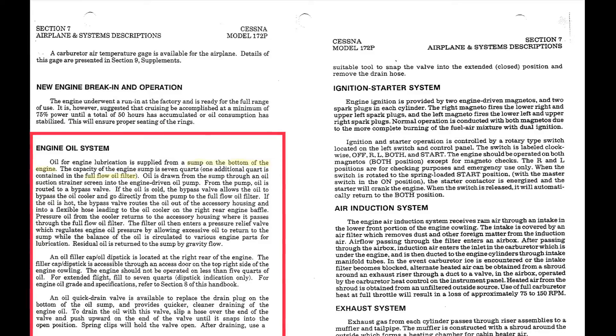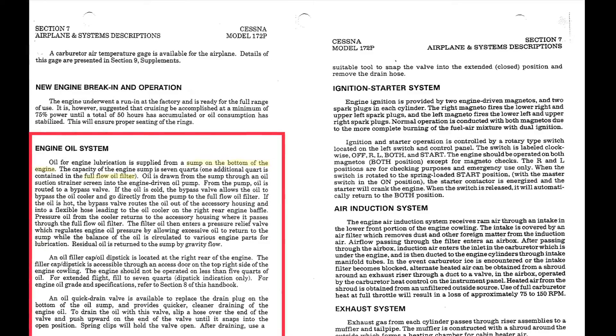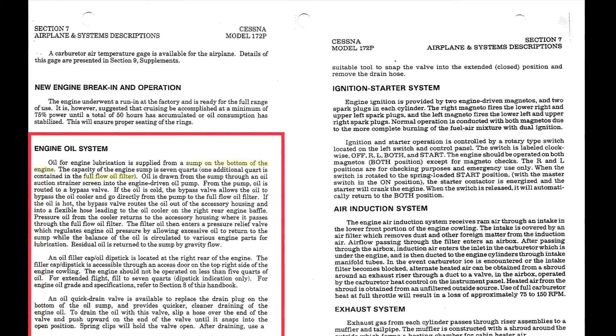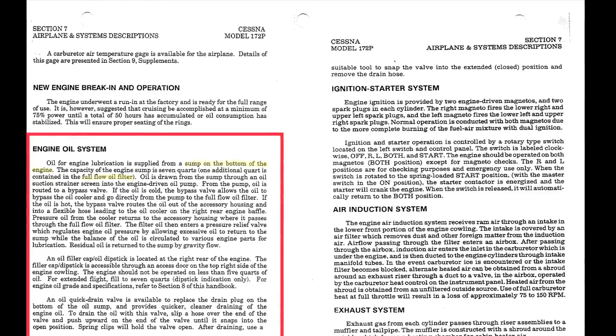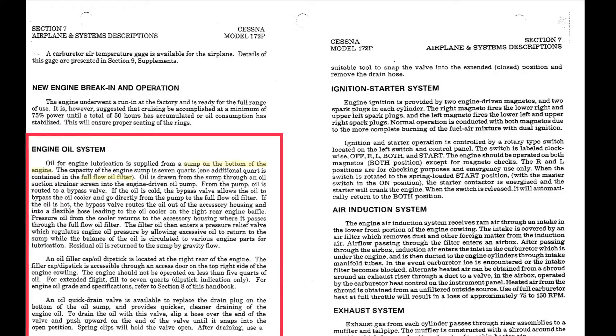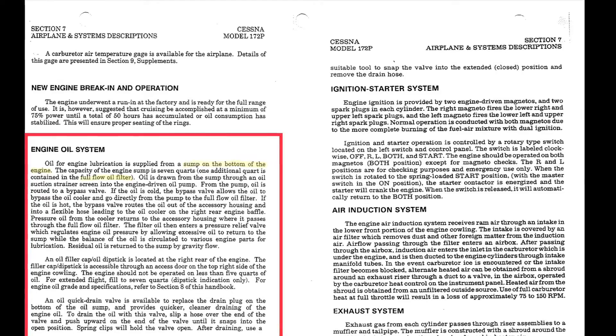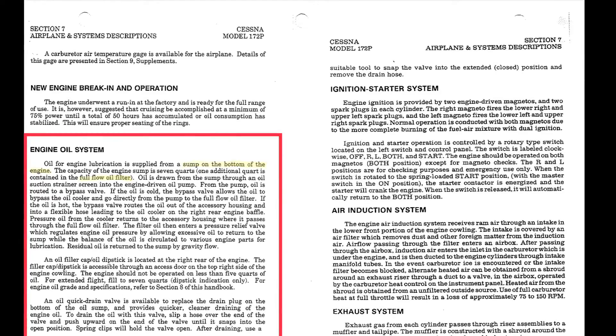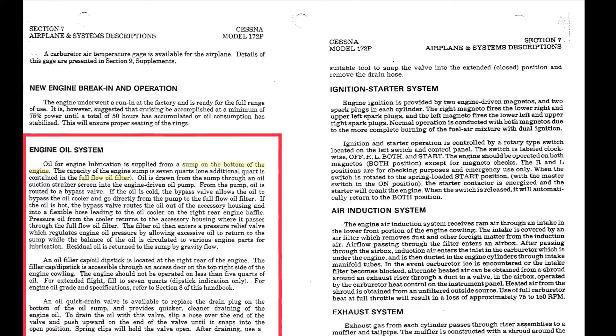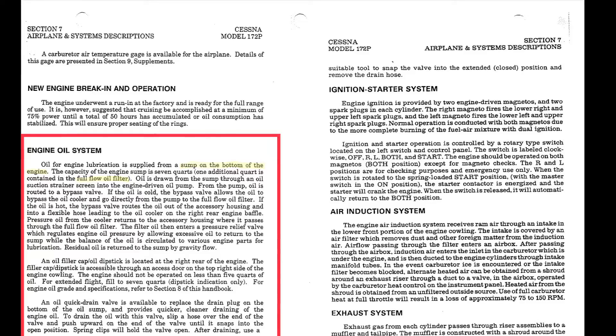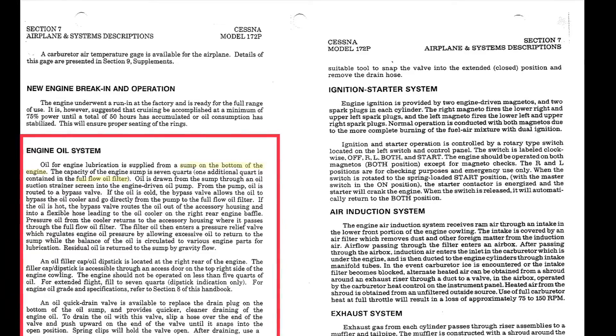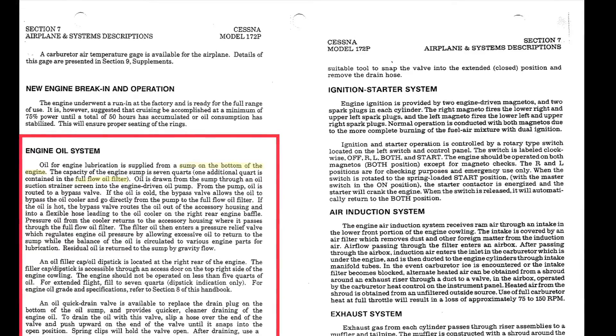So first we're going to look at the description of the oil system in our pilot operating handbook. And for this particular Cessna 172 Papa model, it's in section 7, airplane and system descriptions. And it says, oil for engine lubrication is supplied from a sump on the bottom of the engine. And this is the definition of a wet sump system.